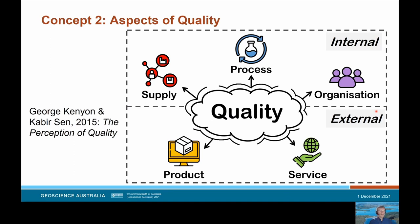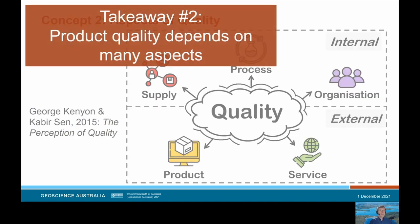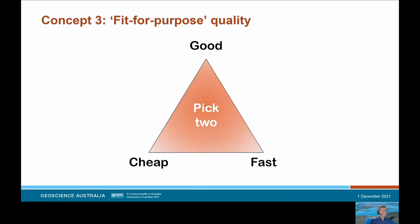I quite like this model for its simplicity in creating conceptual links between what we do internally and the product and service our customers and collaborators see. Although as scientists we most focus on the quality of the product, it is actually dependent on many other aspects throughout the production cycle in order to claim that high quality label. For the third concept I'd like to talk about fit for purpose quality. Many of you would be familiar with this triangle: you can have a product that is good, cheap or fast, but you can only pick two.